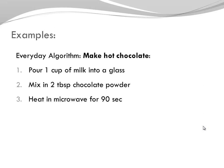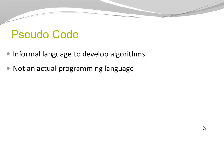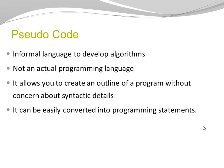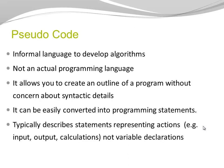When we write algorithms for computer programs, the question comes up: how can we best represent this algorithm? There are two commonly used ways I want to introduce here. One of them is pseudocode. Pseudocode is an informal language to develop algorithms. It is not an actual programming language. Pseudocode allows you to create an outline of a program without being concerned about syntactic details. It can be easily converted into programming statements. Typically, pseudocode describes statements representing actions — for example, input, output, calculations, et cetera — and not variable declarations.